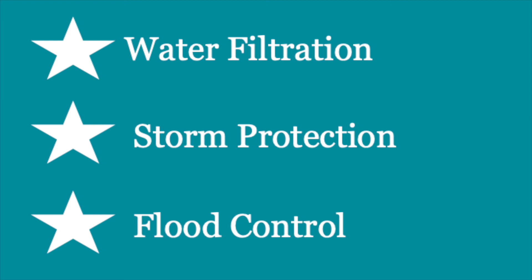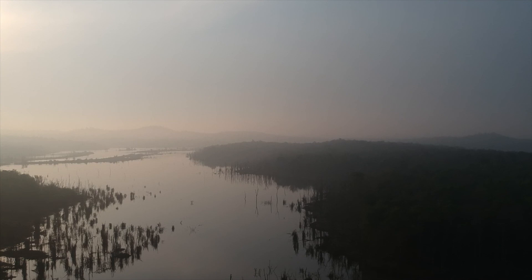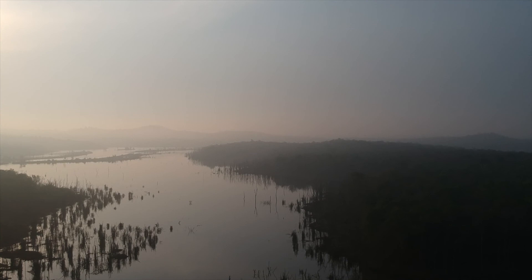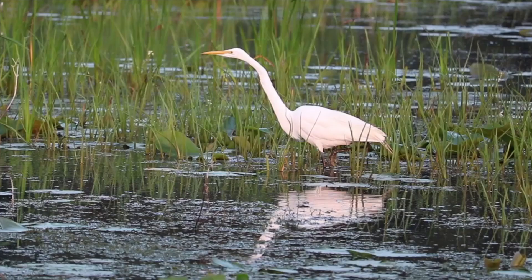Wetlands help with water filtration, storm protection, and flood control. Without wetlands, cities have to spend more money to treat water for their citizens. Floods are more devastating to nearby communities. Storm surges and hurricanes can reach farther inland. Animals are displaced or die out, and food supplies are disrupted.